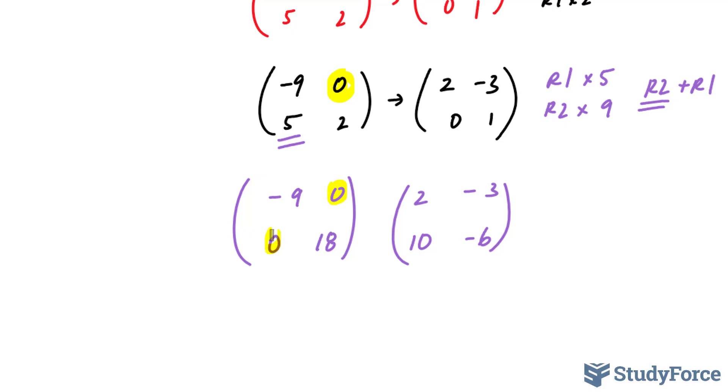Now I have these two elements in the diagonal at 0. All I have to do now is make this negative 9 into a positive 1 and this 18 into a positive 1. And to do that, I'll take row 1 and divide it by negative 9, and I'll take row 2 and divide it by 18.